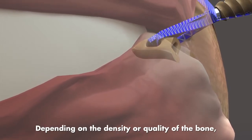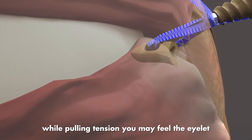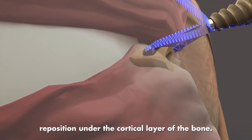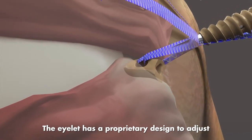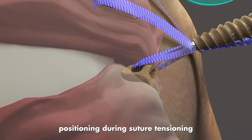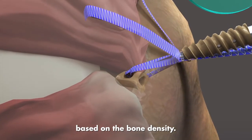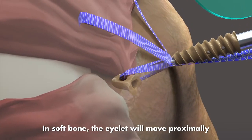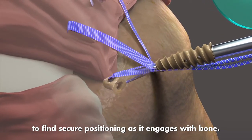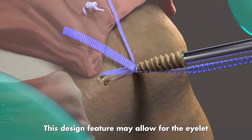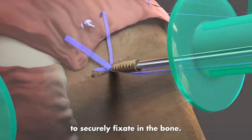Depending on the density or quality of the bone, while pulling tension, you may feel the eyelet reposition under the cortical layer of the bone. The eyelet has a proprietary design to adjust positioning during suture tensioning based on bone density. In soft bone, the eyelet will move proximally to find secure positioning as it engages with bone. This design feature may allow for the eyelet to securely fixate in the bone.